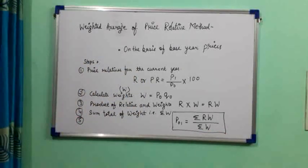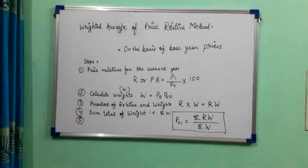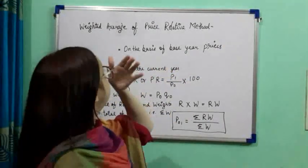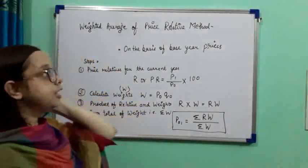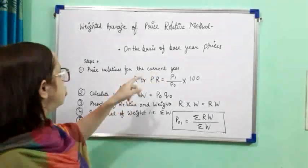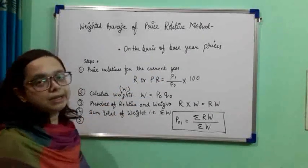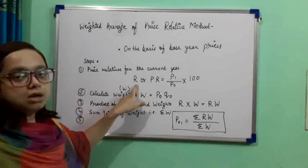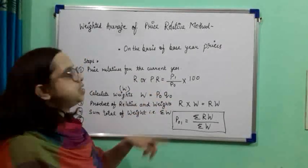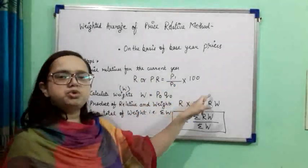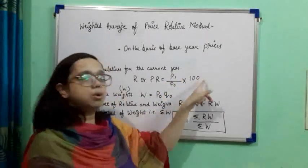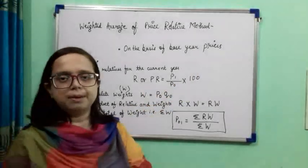To summarize the steps: the weighted average of the price relative method depends on the base year prices. First, calculate the price relative for the current year using R = P1/P0 × 100. Price relative is denoted by R or PR, where P1 is the current year price and P0 is the base year price.